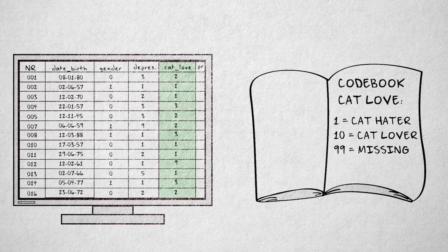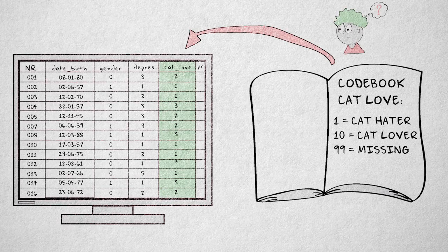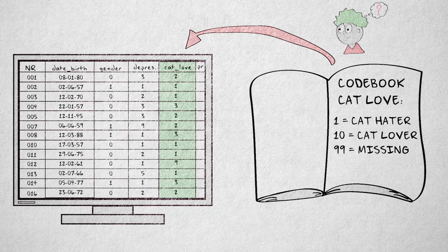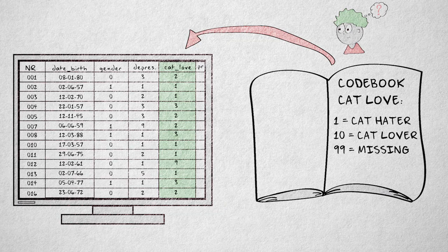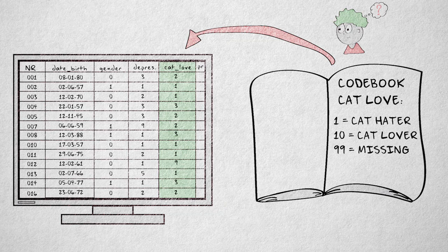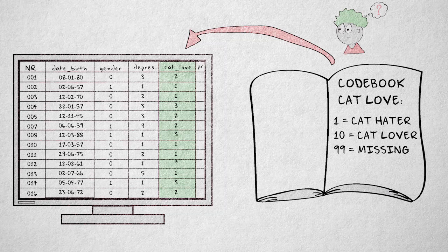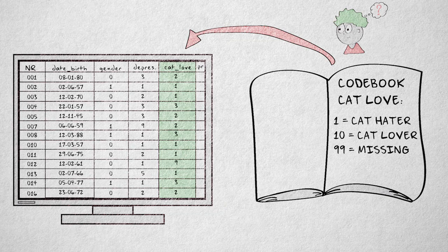The original data and instrument information are also necessary to check the codebook. Sometimes a codebook can be confusing or seem to be wrong. For example, when responses to an item are unexpectedly low, this could be a valid pattern. But it could also be an error in the codebook.